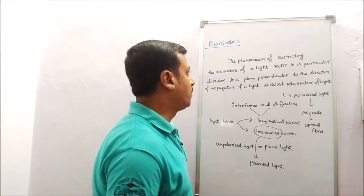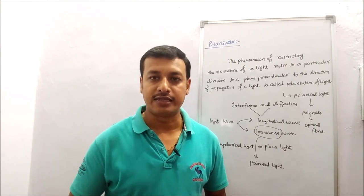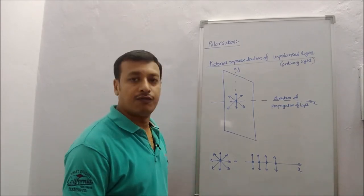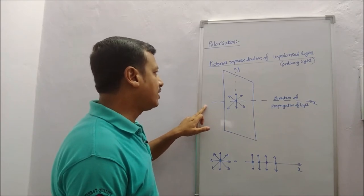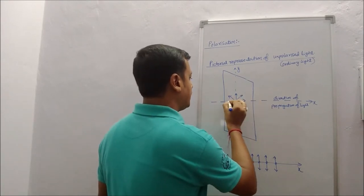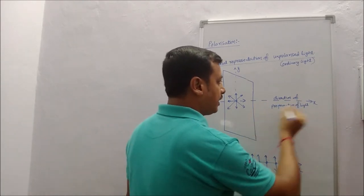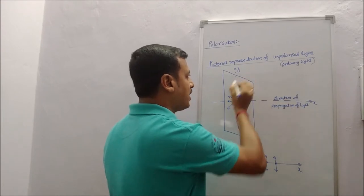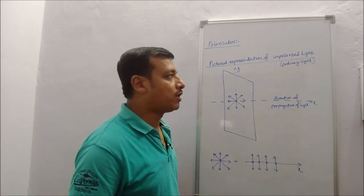Next, we will see how unpolarized light and polarized light differ in their wave representation. Here we see the pictorial representation of unpolarized light. When light comes from an ordinary source like the sun, it oscillates in all directions. The x-axis represents the direction of propagation, and we take the xy-plane to represent the propagation of light. Unpolarized light is sometimes also called ordinary light.